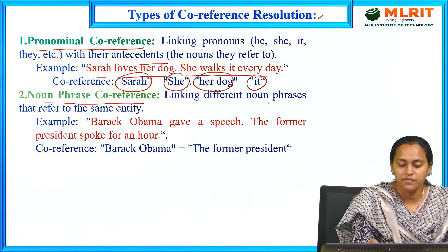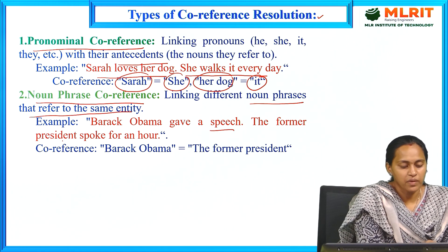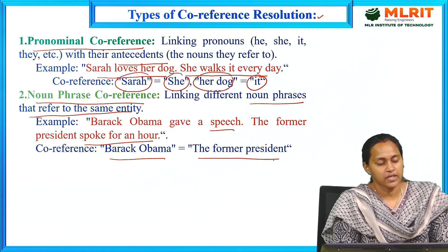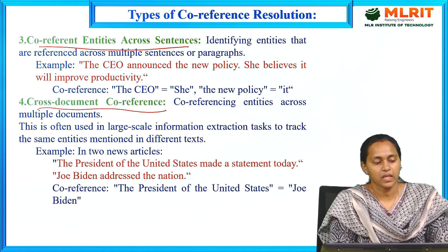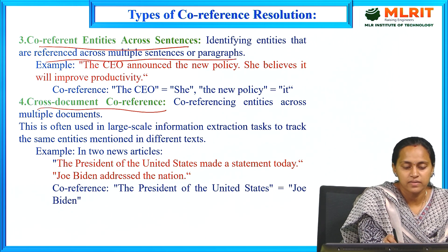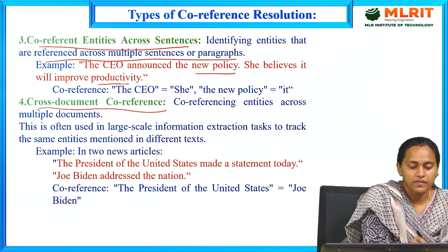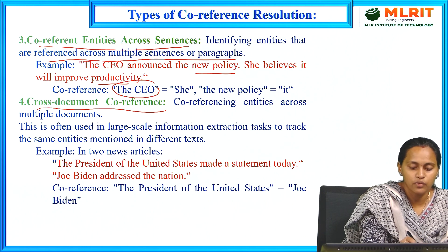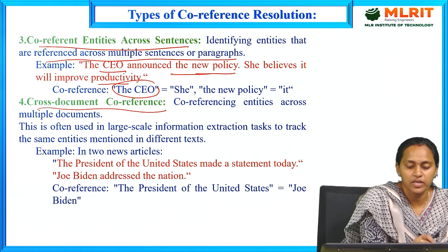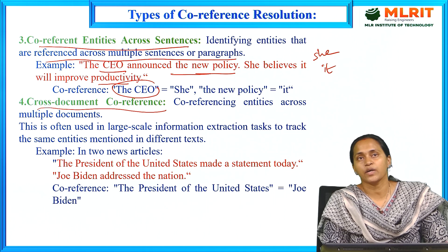In noun phrase coreference, different noun phrases refer to the same entity. For example: 'Obama gave a speech. The former president spoke for an hour.' Here, 'Obama' and 'the former president' are co-referent. In coreferent entities across sentences, entities are identified across multiple sentences and paragraphs. For example: 'The CEO announced the new policy. She believes it will improve productivity.' Here, 'the CEO' is referred to as 'she' and 'the new policy' is referred to as 'it.'